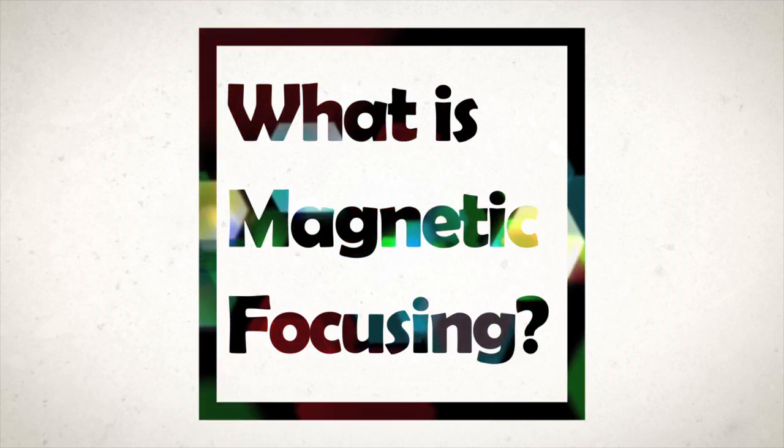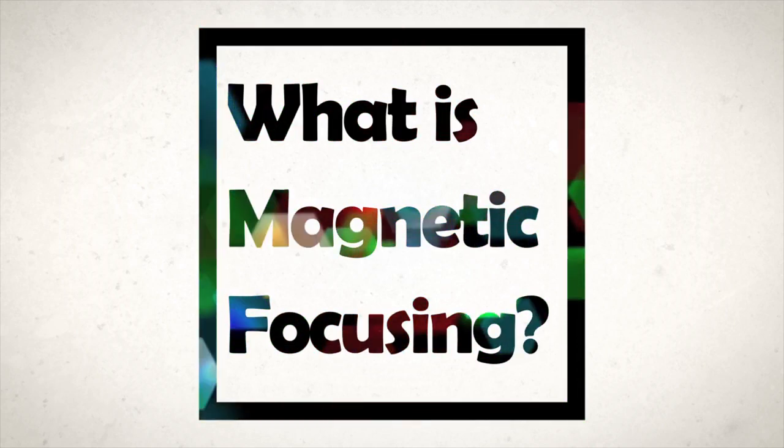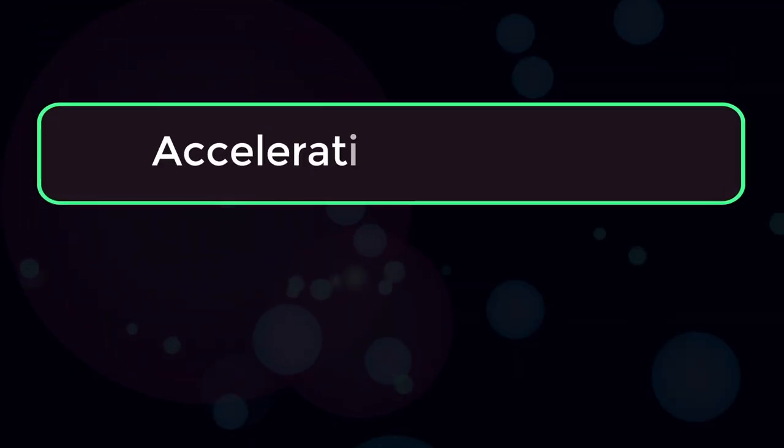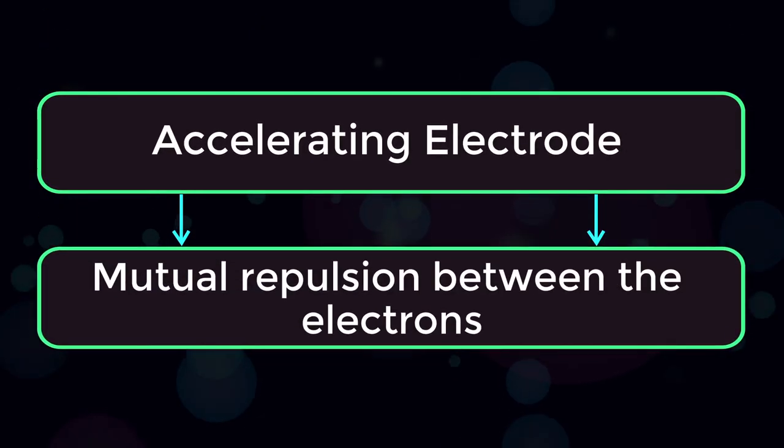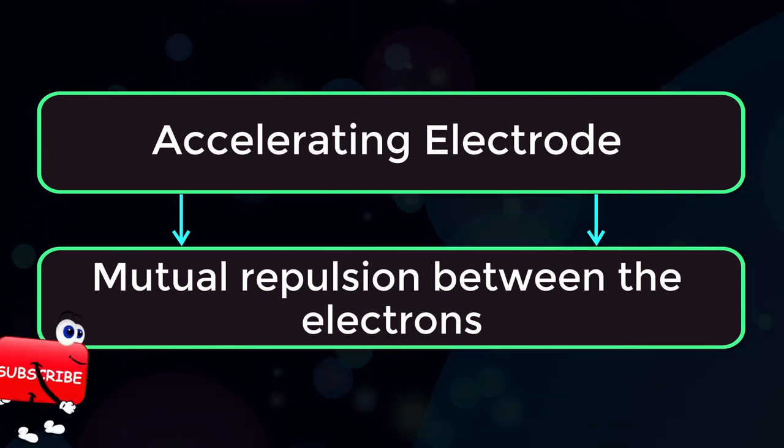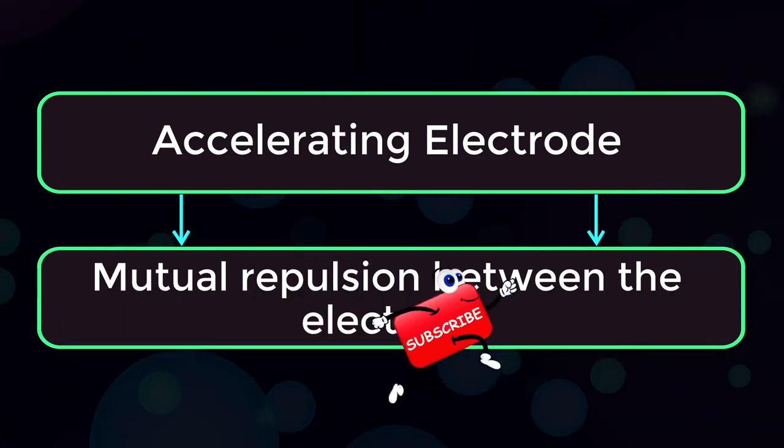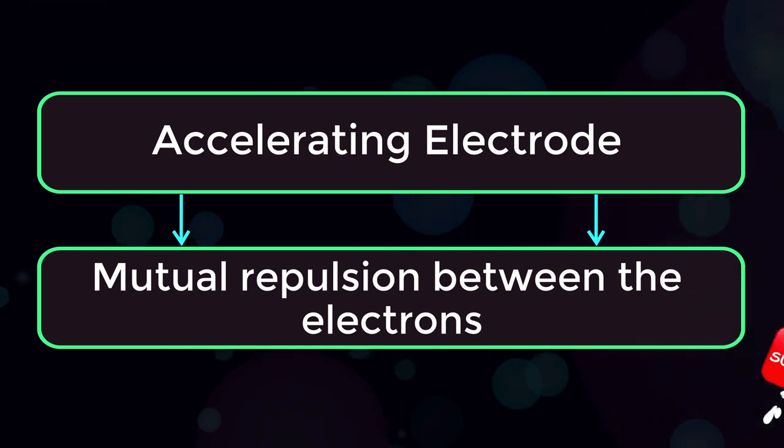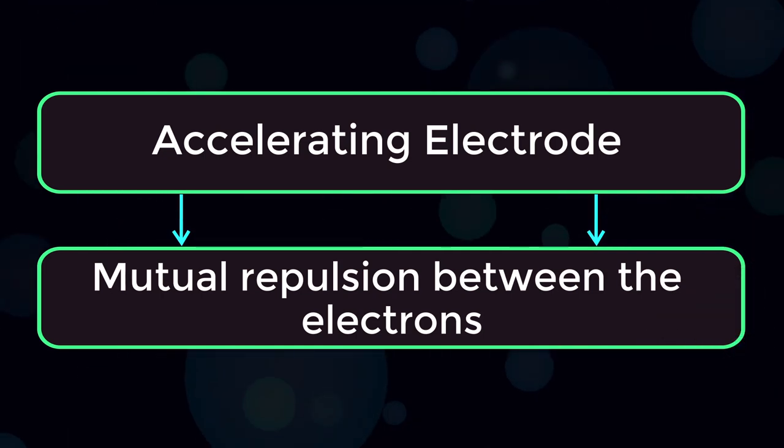What is Magnetic Focusing? The convergent beam from the accelerating electrode has a tendency to spread because of the mutual repulsion between the electrons. Hence some focusing device is required to bring the beam to a sharp focus at the screen.